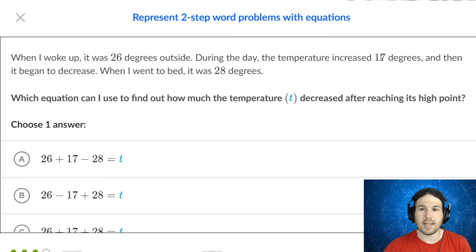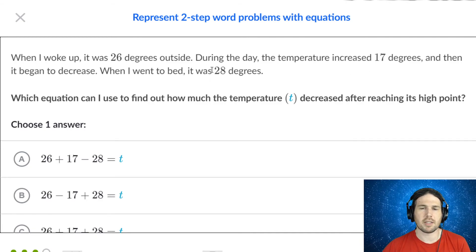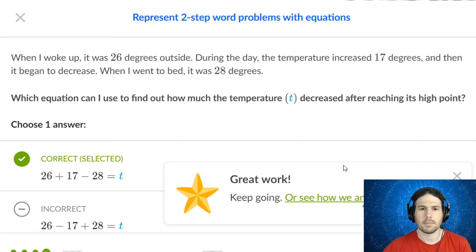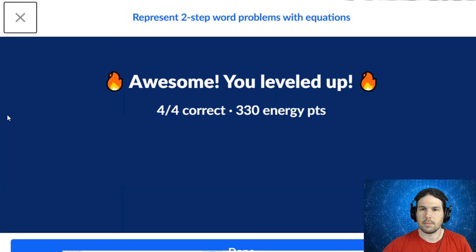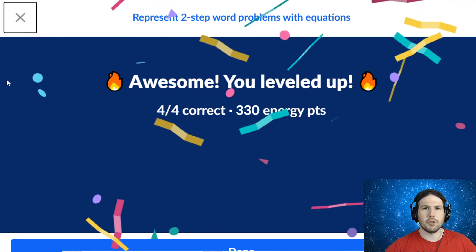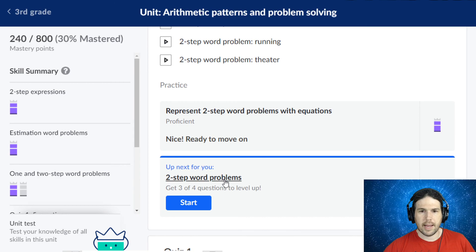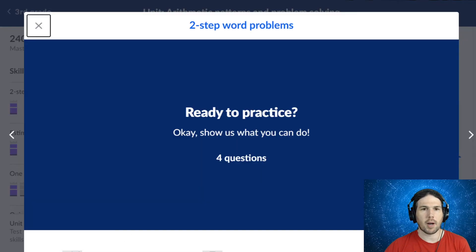So it was 26 plus 17, and then minus the 28 that's left over. A is the correct answer. Represent two-step word problems with equations. That's that. And now just two-step word problems.